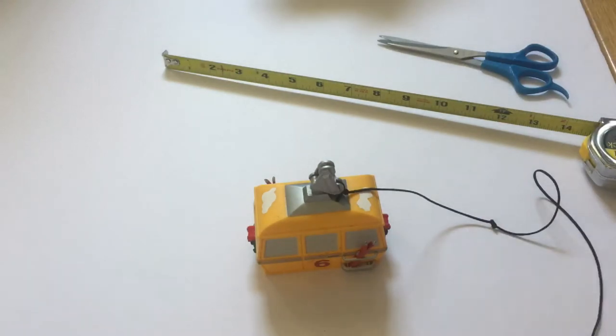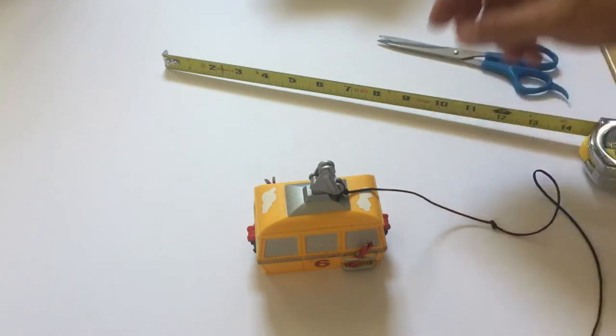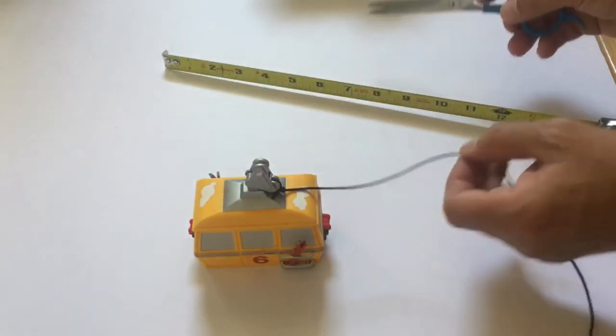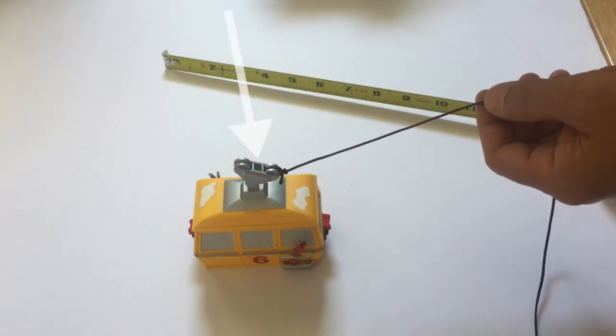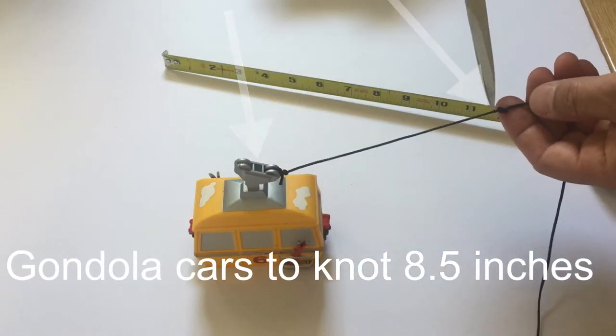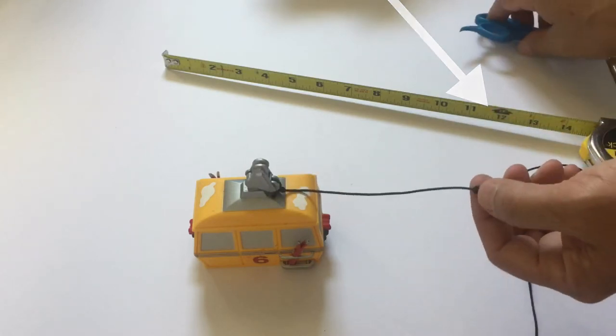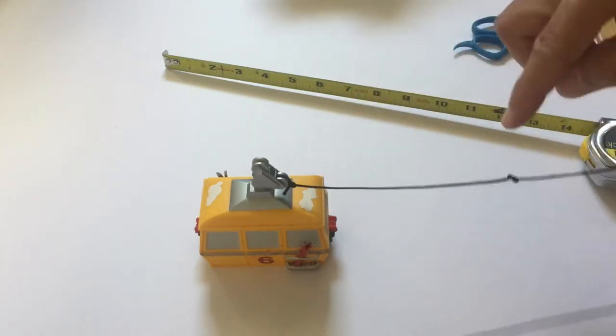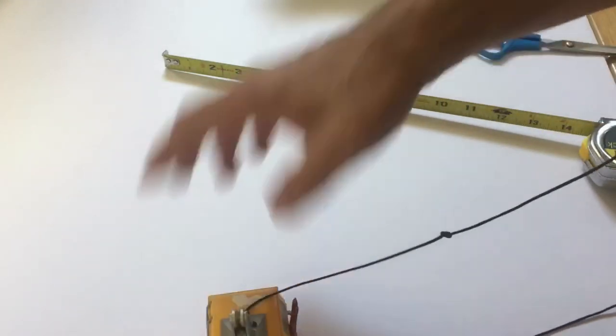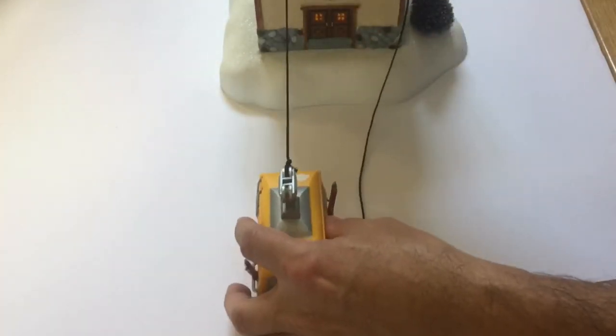When you restring the unit and retie it to all the gondola cars, do the same process over again. Cut off the excess string if you have any. From the gondola car to the knot, 8.5 inches. This will allow the knot to hit the switch and give the proper distance so the cars are not hitting up against the tower when they go back and forth.